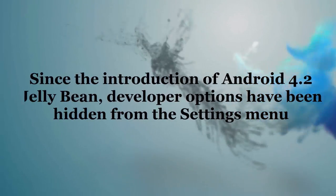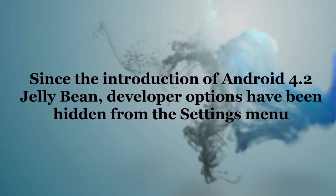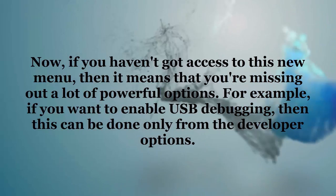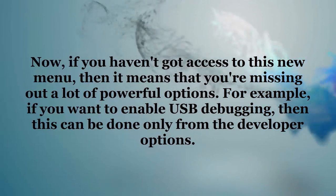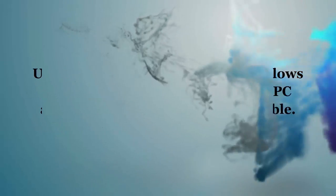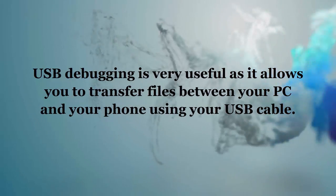This applies to any Android device that doesn't have developer options in the settings menu. Since the introduction of Android 4.2 Jelly Bean, developer options have been hidden from the settings menu. If you haven't got access to this menu, then it means you are missing a lot of powerful options. For example, if you want to enable USB debugging, this can be done only from developer options.